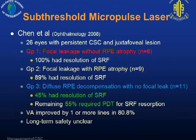With subthreshold micropulse laser, you use very minute energy to cause microenvironmental changes in the macula. This resulted in quite good results in patients with focal leakage. However, in patients with diffuse RPE decompensation with no focal leakage, most patients did not respond to this treatment and required additional PDT.